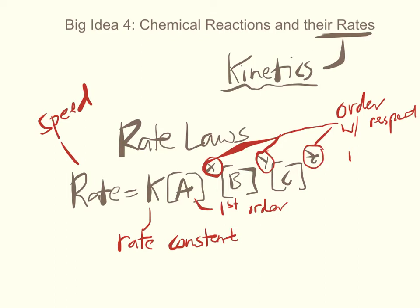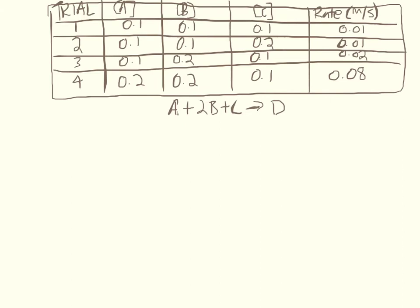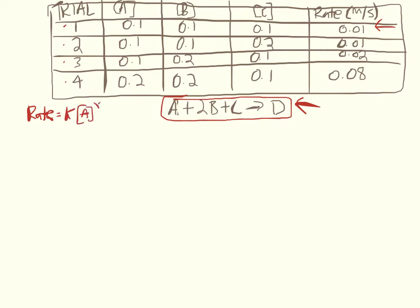These values of X, Y, and Z have to be determined by experiment — every reaction is going to be different with a different mechanism, and the only way to figure them out is by actually doing the experiment. For example, if we have a reaction A + 2B + C → D, we do four different trials where we vary the concentrations of each reactant and measure the rate in molarity per second. From this data we can determine the rate law: rate = K[A]^x[B]^y[C]^z.